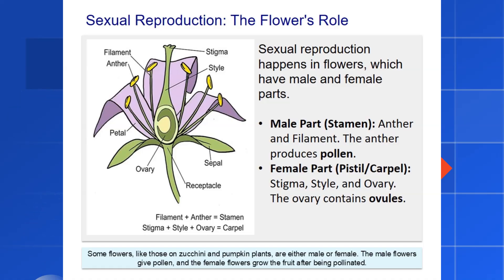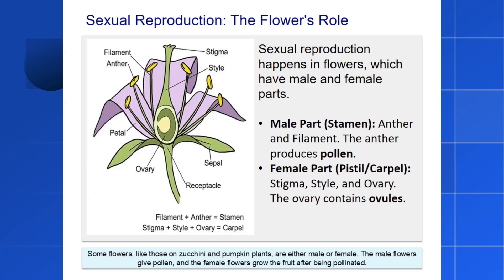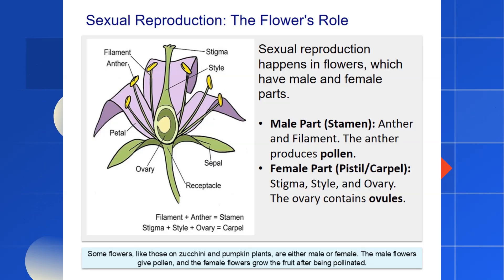Now, let's zoom in on sexual reproduction. The main stage for this is the flower. A flower isn't just pretty — it's a highly sophisticated reproductive machine. It contains both male and female parts. The male part is called the stamen, which consists of the anther and a stalk called the filament. The anther's job is to produce tiny grains called pollen, which contain the male reproductive cells. The female part is called the pistil or carpel. It has a sticky top called the stigma, a tube-like structure called the style, and a base called the ovary. Inside the ovary are the ovules, which contain the female reproductive cells.